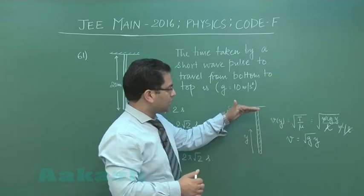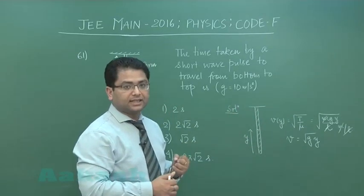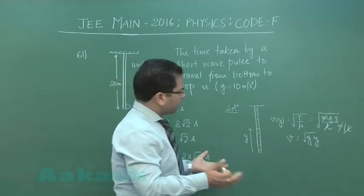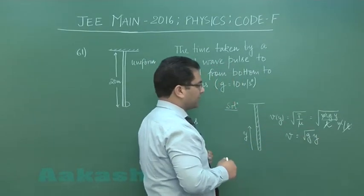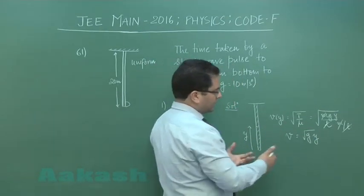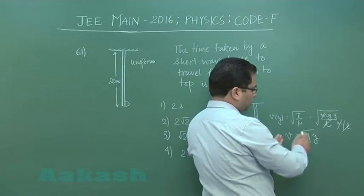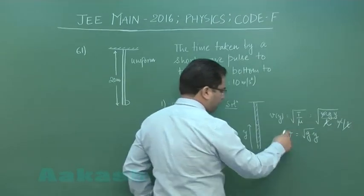Higher the wave goes, higher would be the velocity. Now one way is that it is very evident that it is a uniformly accelerated motion because you can easily compare with root of 2ay or if I go with the generalized technique.